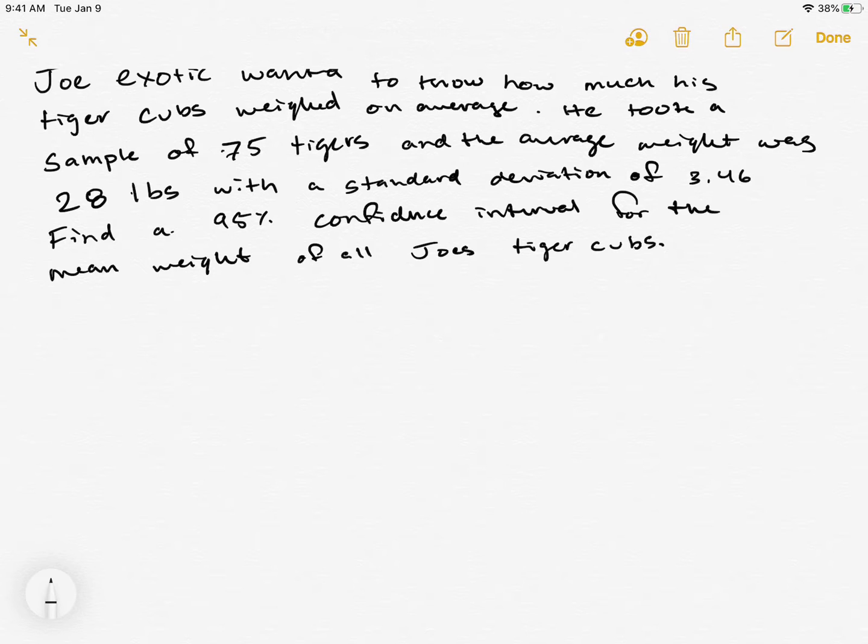We have our good friend Joe Exotic and he wants to know how much his tiger cubs weigh on average. He took a sample of 75 tigers and the average weight was 28 pounds with a standard deviation of 3.46. We want to find a 95% confidence interval for the mean weight of all Joe's tiger cubs.